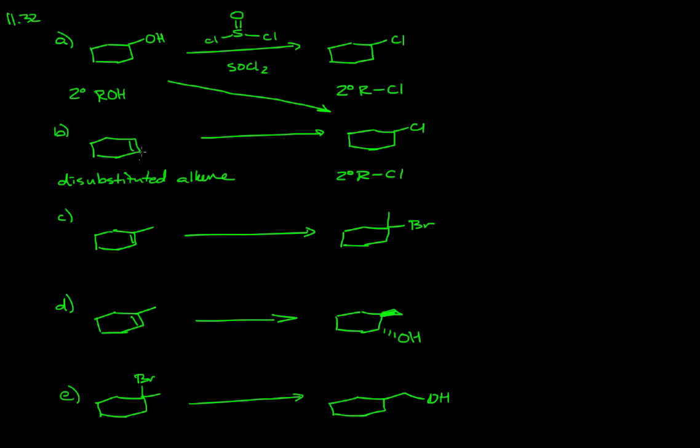Since we've seen from part A that this secondary alcohol can go to that secondary chloride, the question is now a problem of taking this alkene and transforming it into that secondary alcohol. This is formally a hydration of an alkene.